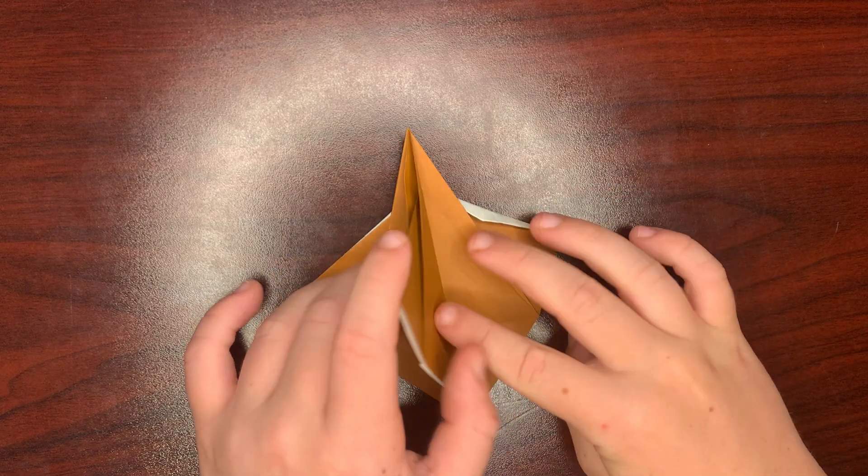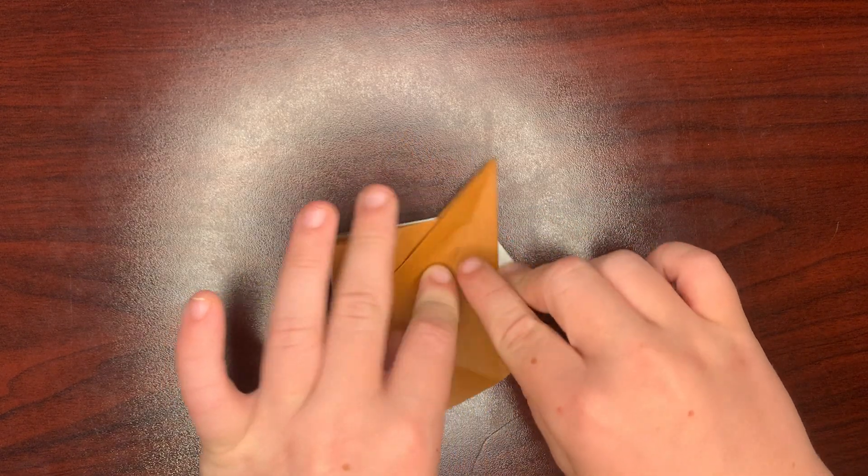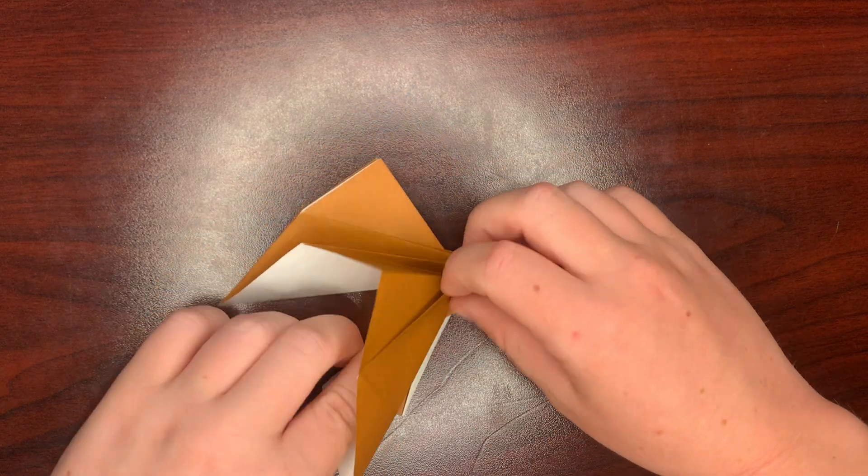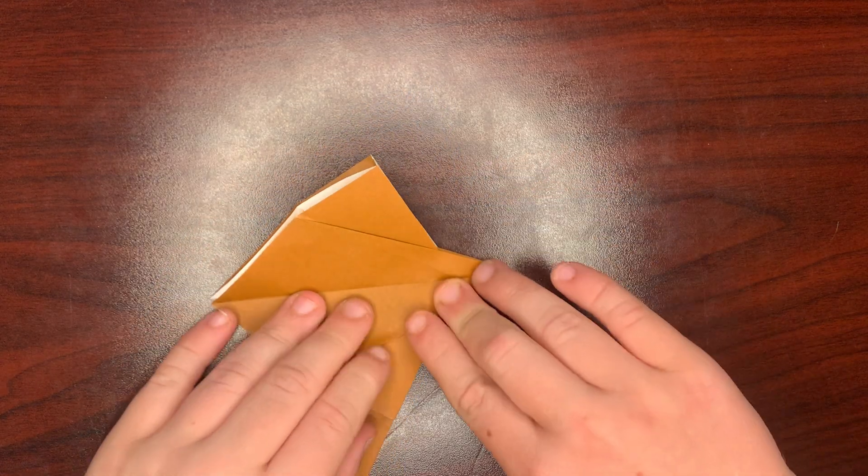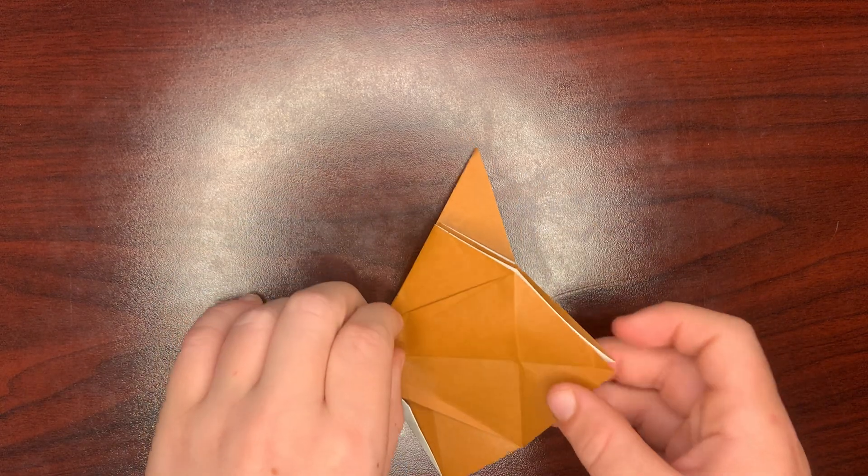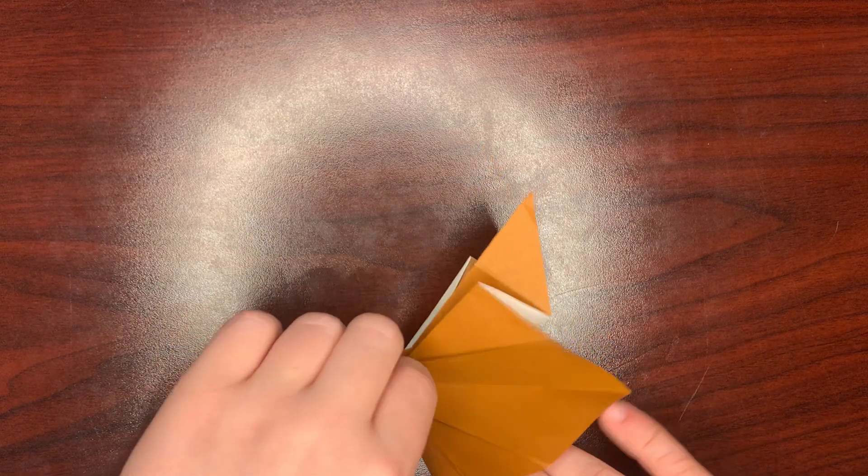Okay, once you're done with that, you want to just open this up and fold this edge like you did for the other edges, just straight along that. Flip it over and do the same thing on this side.